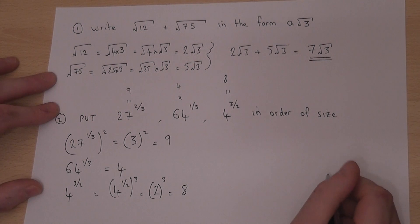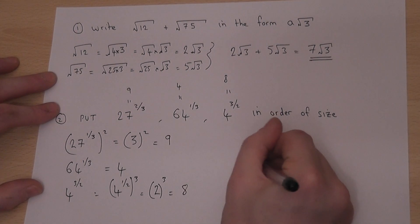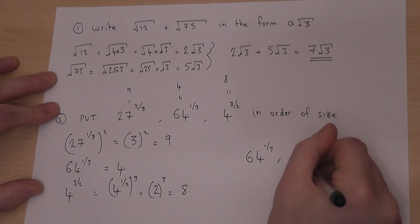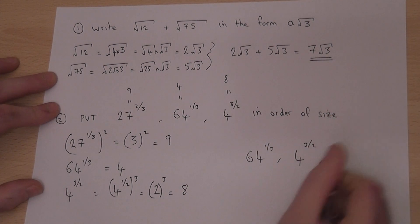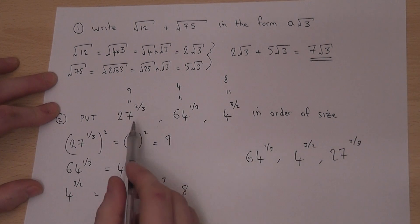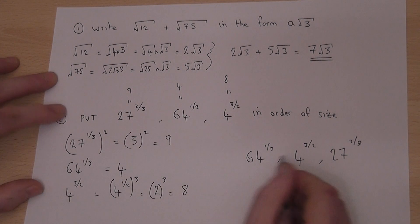So in order of size, that's the lowest. Then 8, so 4 to the power of 3 over 2. And finally, 27 to the power of 2 thirds. So I've written down the original numbers in order of size.